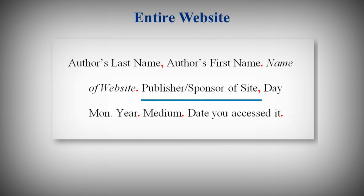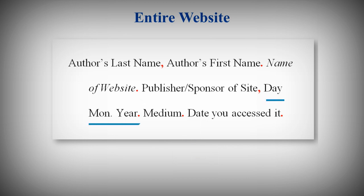Next is the name of the institution or organization affiliated with the site. If this information is not available, enter n.p. for no publisher. After the comma, enter the date of publication. The format is day, abbreviated month, and year.